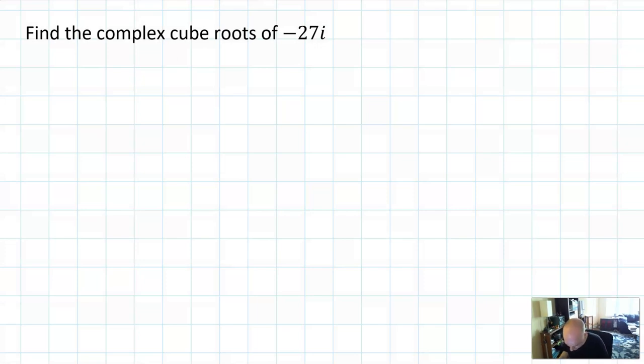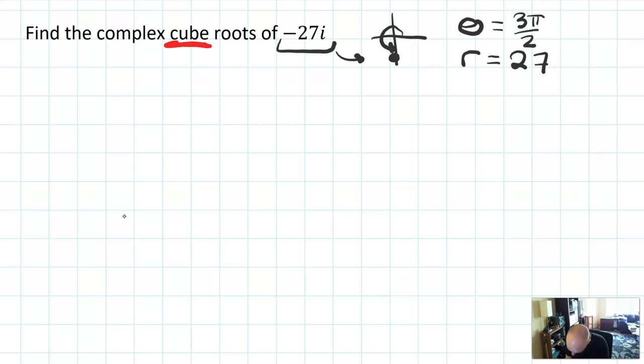We're first going to find the complex cube roots of negative 27i. Let's sketch it out actually. It would be down here, so it would have an angle of 3π over 2 and a radius of positive 27. We want the radius to be positive. When I see I'm looking for cube roots, I know I'm looking for three roots.